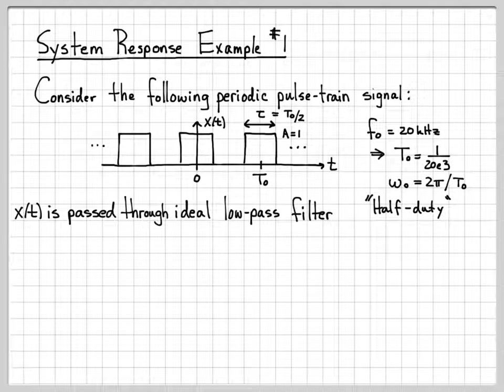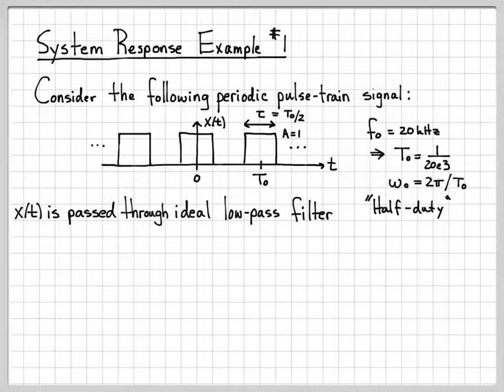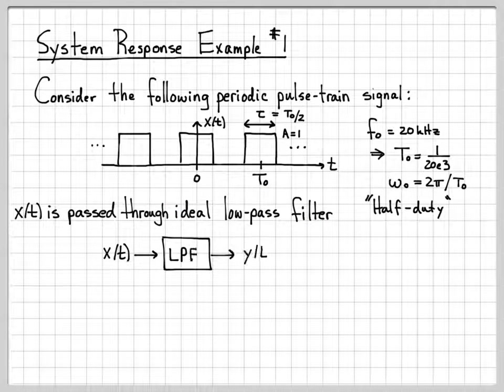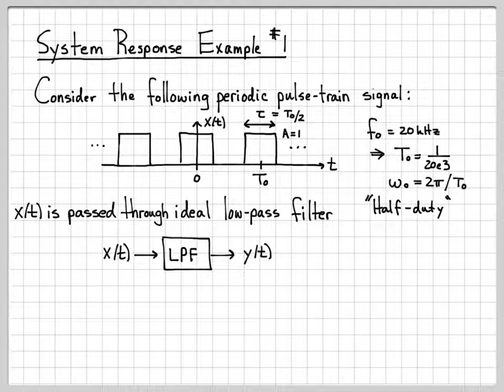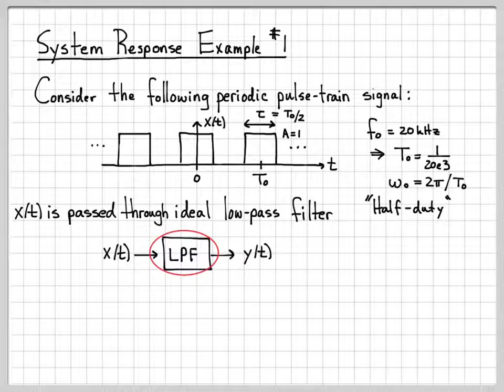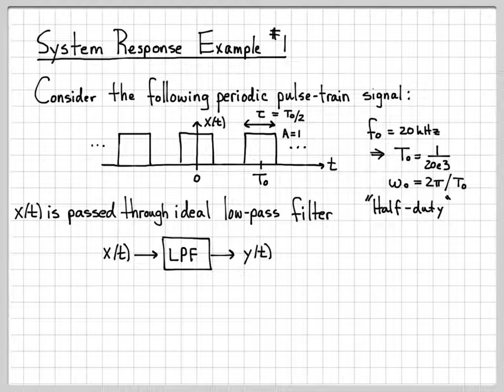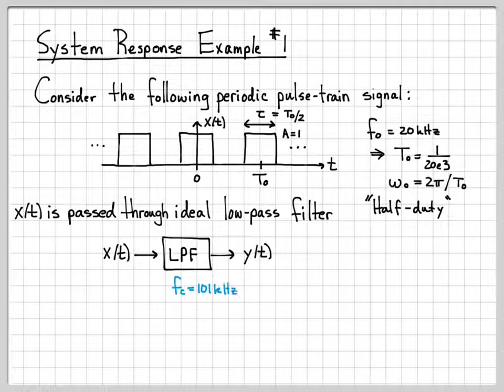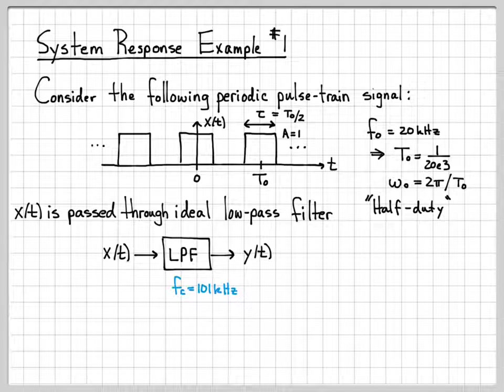So this is the signal x of t we're going to deal with in this problem, and what we're going to do is we're going to pass this signal through what we call an ideal low-pass filter. So for now, we can think of that ideal low-pass filter, LPF, as this box, this linear system that's going to act on x of t, resulting in the output signal, y of t. So I'm going to tell you some things about this low-pass filter. This low-pass filter, we're actually going to characterize in the frequency domain. So I'm going to give you some properties and parameters of it, and we'll discuss what these mean.